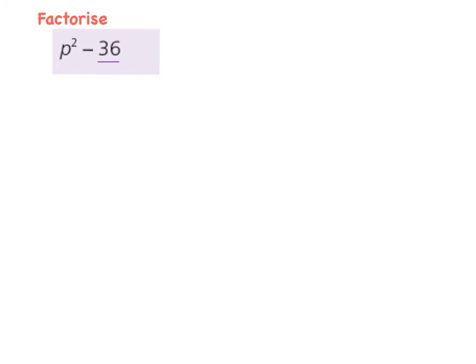We can write it as six squared. So I can now write this sum as p squared minus six to be squared. Again, what gives me p squared? It's p all to be squared minus six all to be squared.